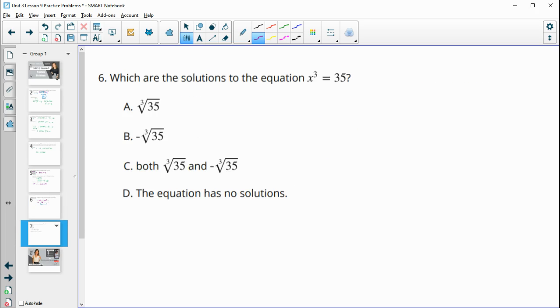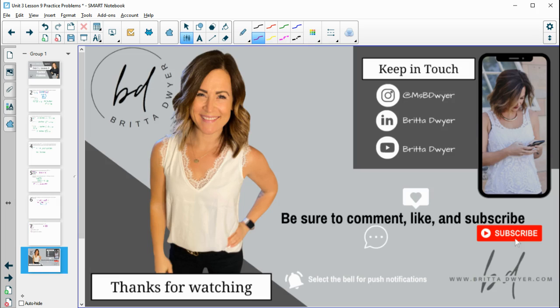Number 6, what are the solutions to the equation x cubed equals 35? To undo a cubed exponent, we just do a cube root. So it's x equals the cube root of 35. It's not going to be both solutions because if we cube a negative number, it's negative. And our solution here is positive. So we're going to want the positive root of 35 only. We do not allow the negative version.